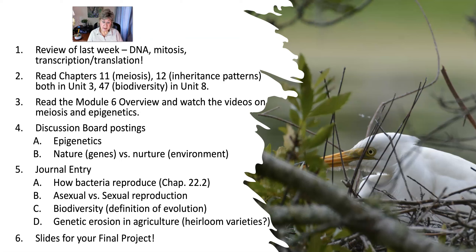That creates a problem for bacteria — how do they get new traits? Through different processes found in Chapter 22, Section 2 of your free OpenStax textbook, Biology 2nd Edition: mutation, conjugation, transformation, and transduction. These are ways that bacteria get new genetic traits. This is very important because if bacteria didn't get new traits, they would never be able to survive in different environments — it's the survival of the fittest. They have to have a way to get new genetic traits.